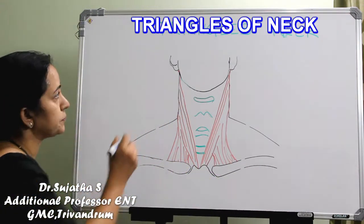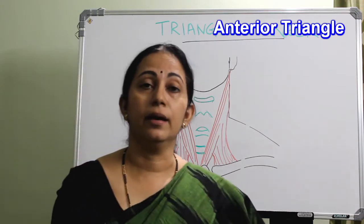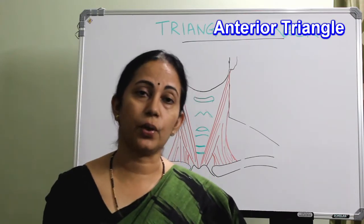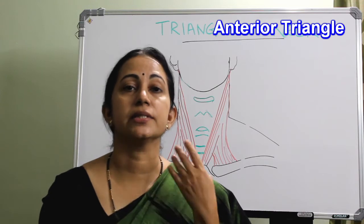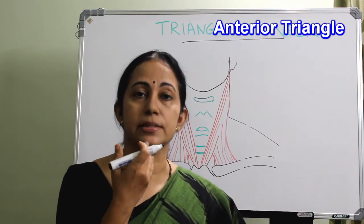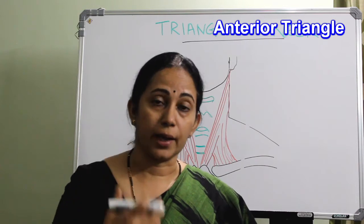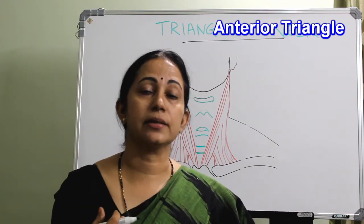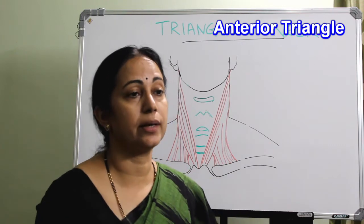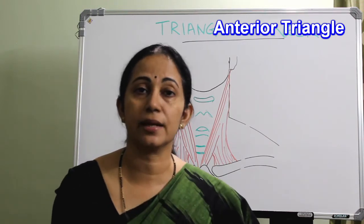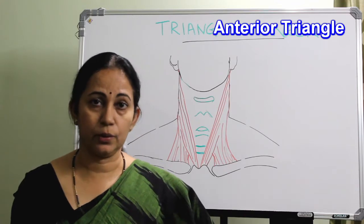The triangles of the neck is a very important topic. The anterior triangle is further divided into submental, submandibular, carotid, and muscular triangles. The posterior triangle is again divided into a superior occipital triangle and an inferior supraclavicular triangle.